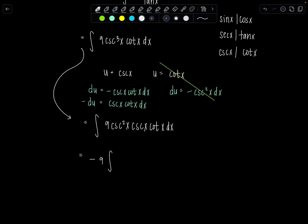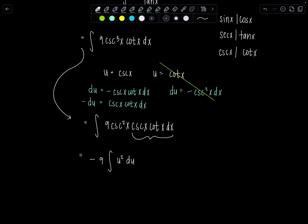So cosecant squared x is going to be u squared. And then all of this loveliness right here is just du. Good, good, good.